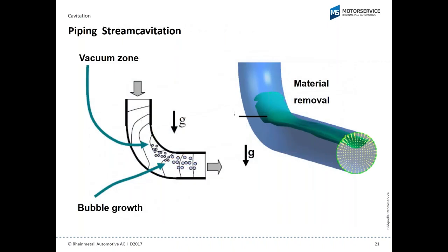Pipe-stream cavitation occurs when a pipe is bent at the wrong angle — maybe due to an accident or use of a non-original pipe. The water flowing around a sharp angle creates turbulence and a vacuum zone where bubbles grow. Always ensure the correct pipe with the correct routing and position is used, and do not damage pipes going to the cooler or water pump.